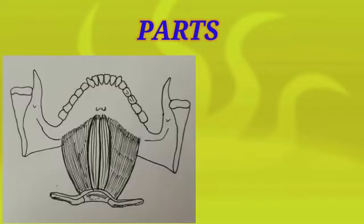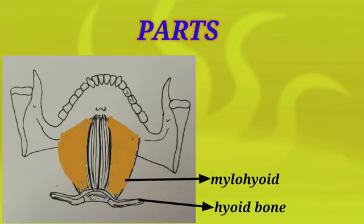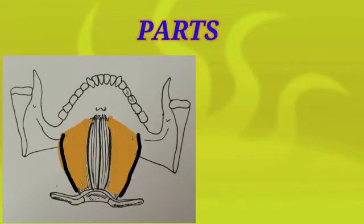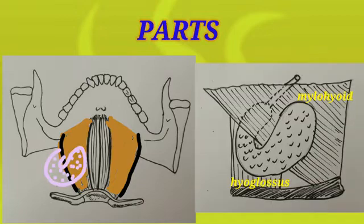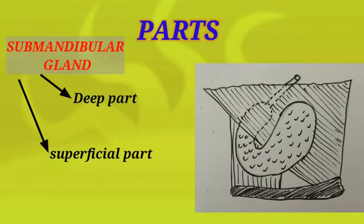Parts of the submandibular gland. The mylohyoid line, which is present on either side of the inner surface of the body of the mandible, gives origin to the mylohyoid muscle which gets inserted into the hyoid bone. Along the posterior border of this mylohyoid muscle the submandibular gland sweeps and forms two important parts: one is the superficial part, present outside the mylohyoid muscle, and the other is the deep part, present deep to the mylohyoid muscle.